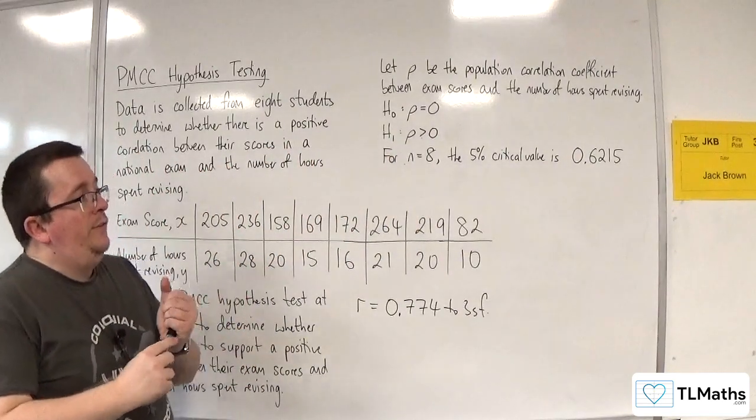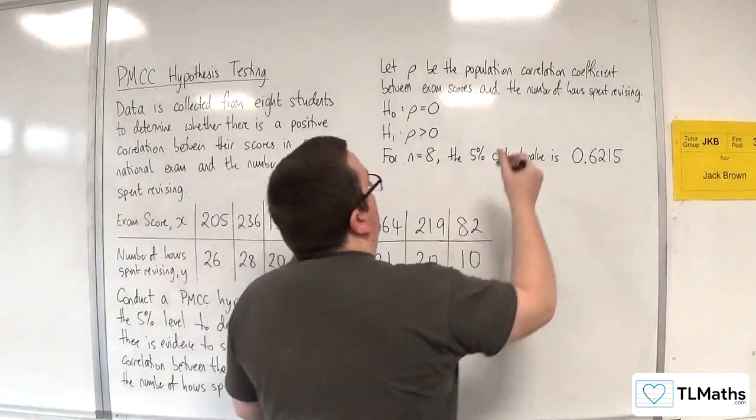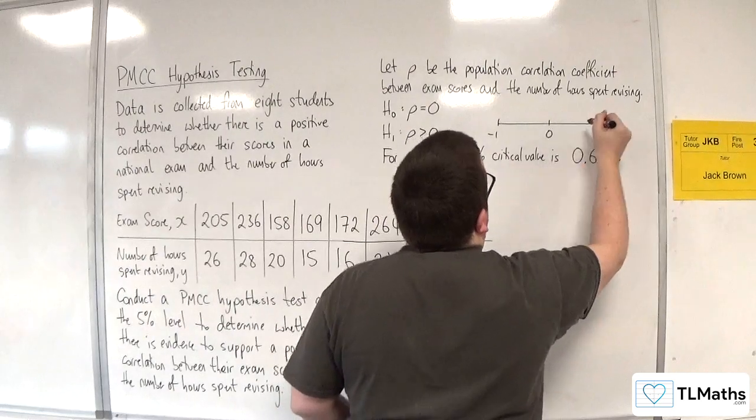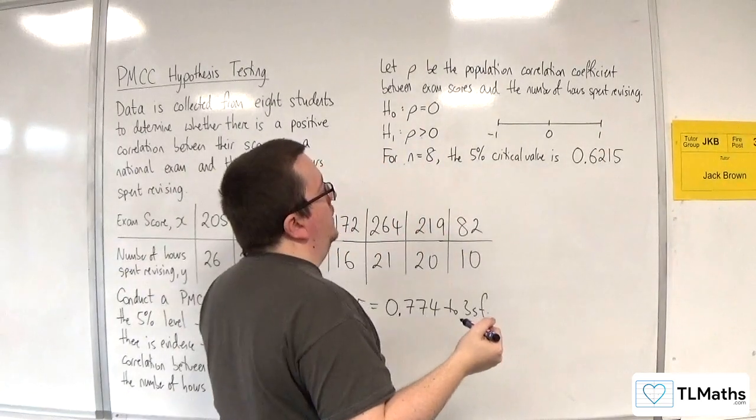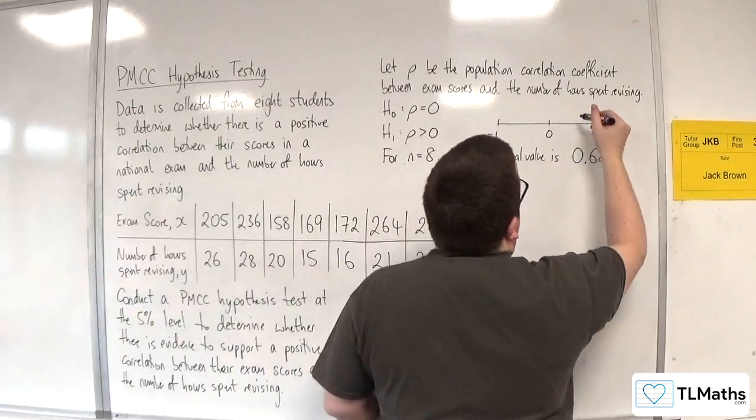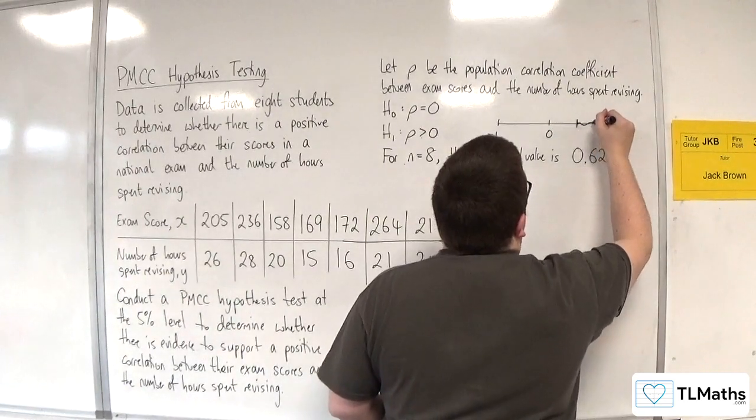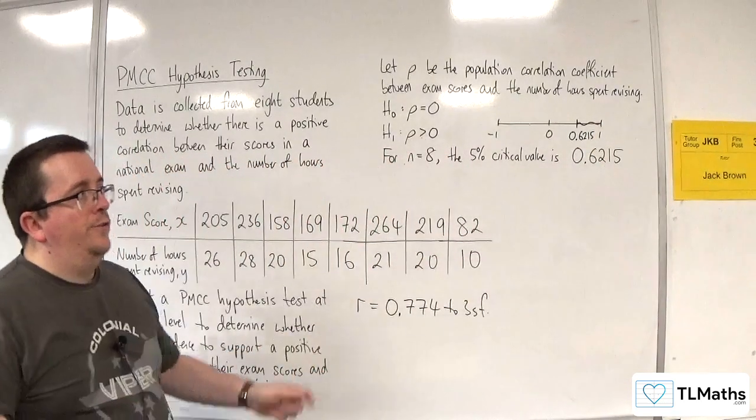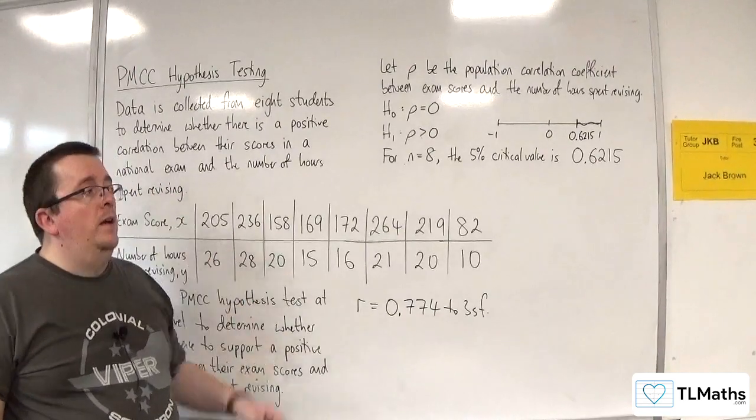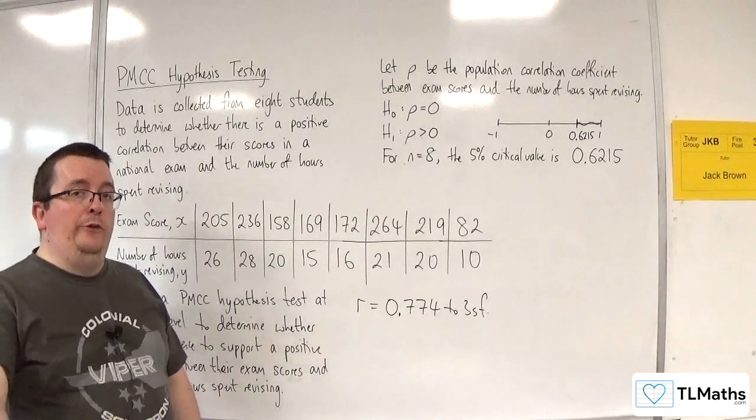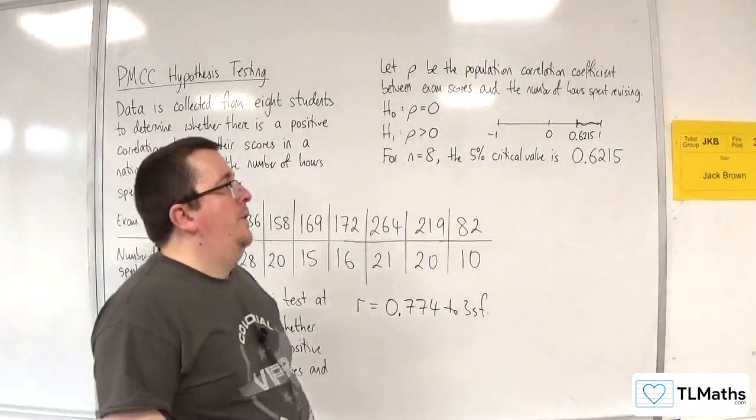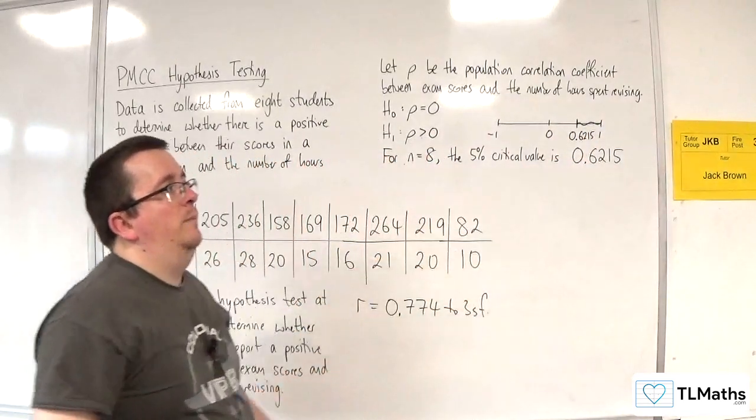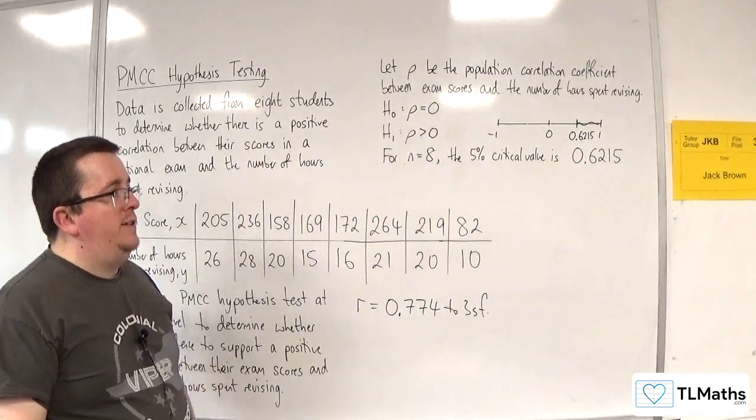Now what that means is, the best way to interpret this is using a number line. So here's minus 1, here's 0, and here's 1. So 0.6215 is about there, and so this is my critical region, that region there. Anything that falls within that region, I will reject the null hypothesis, inclusive. So if R is equal to 0.6215 or greater than that, up to 1, inclusive, then I reject the null hypothesis.